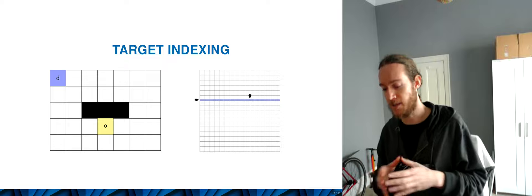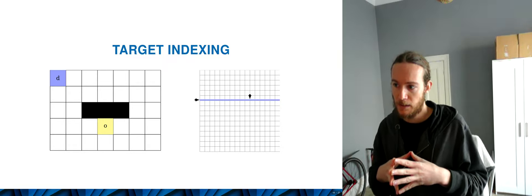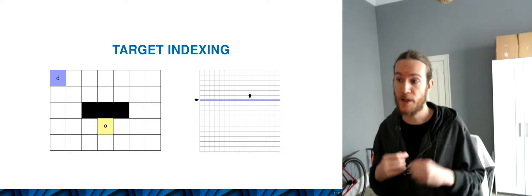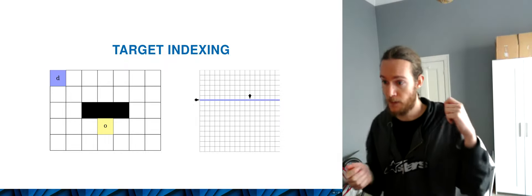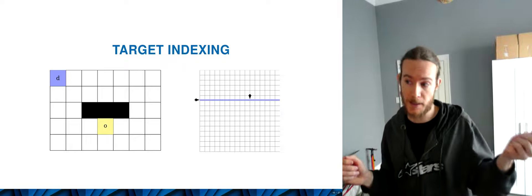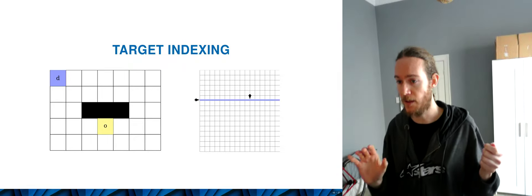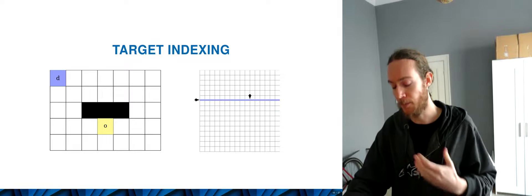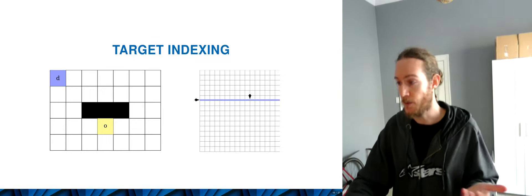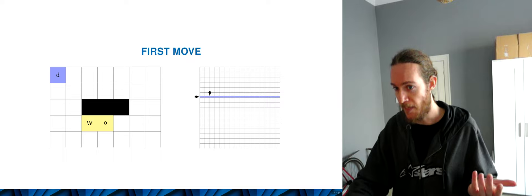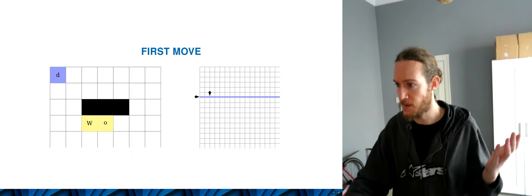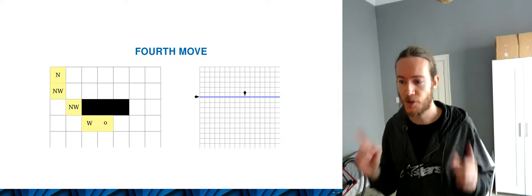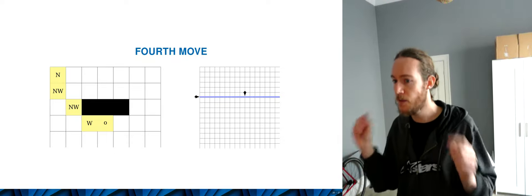If we flip that table — so we just transpose this move table — and now index by target, we get a row that contains the first move towards D from all the other tiles in the grid. An interesting phenomenon happens: what's my first move from O towards D? We say this is west. Then from that new tile towards D, it's northwest, northwest again, and then north. But the interesting thing is that the row hasn't changed — we just have one row, and we query this single row.